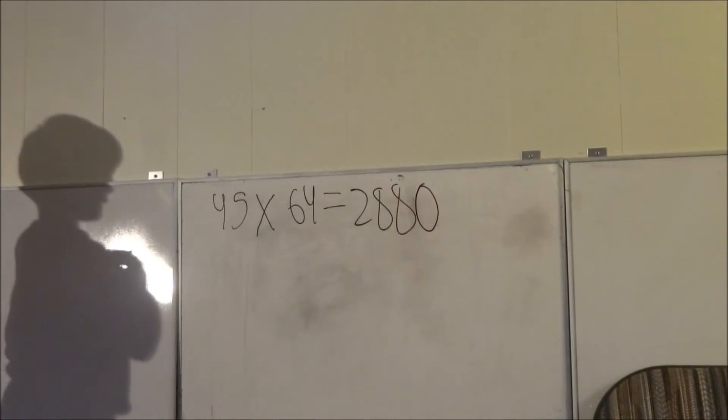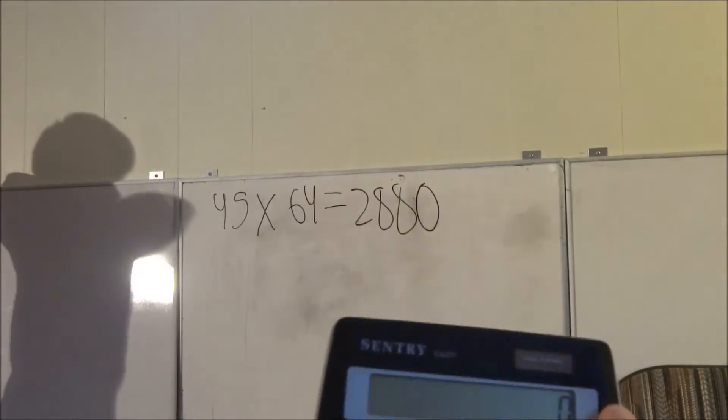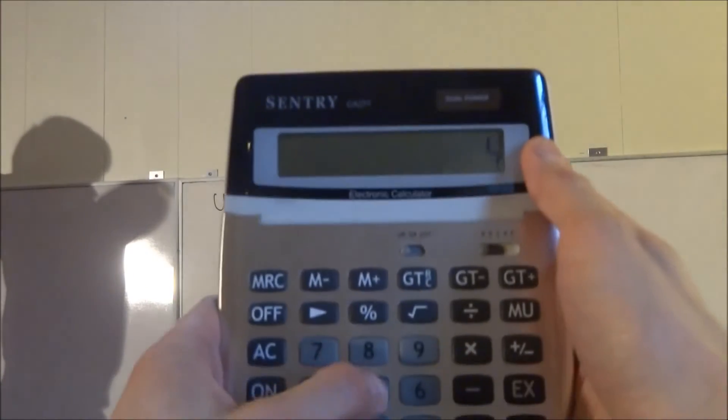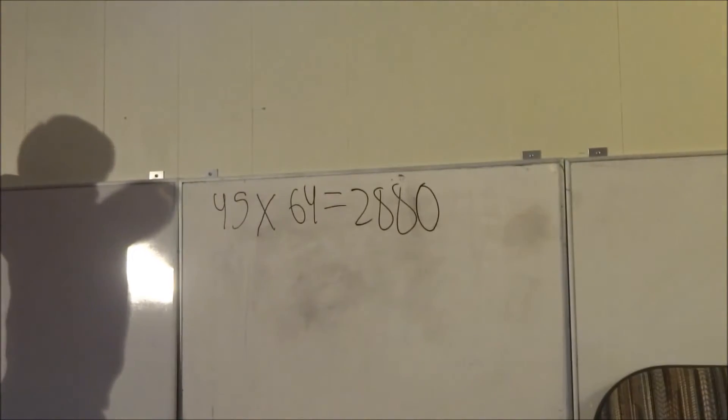What answer did you get? 2880. Okay, let's try it. 45 times 64. 45 times 64 is 2880. Great job.